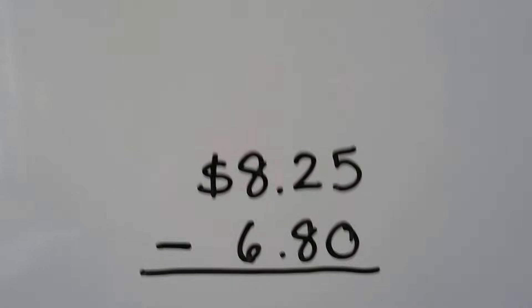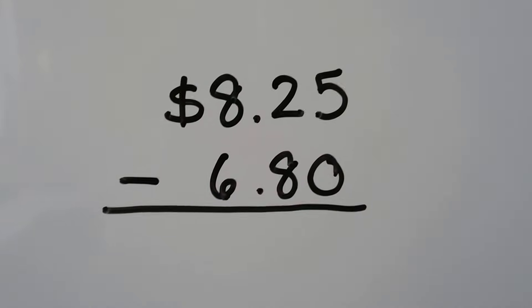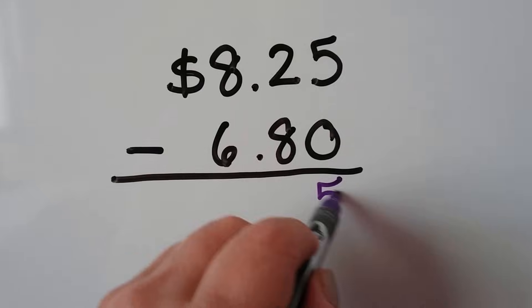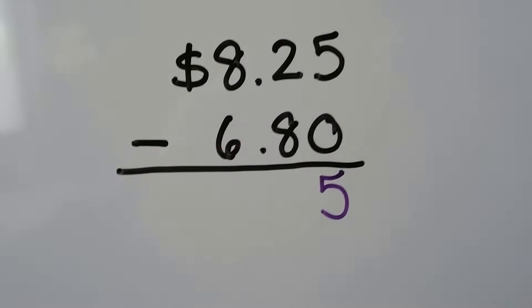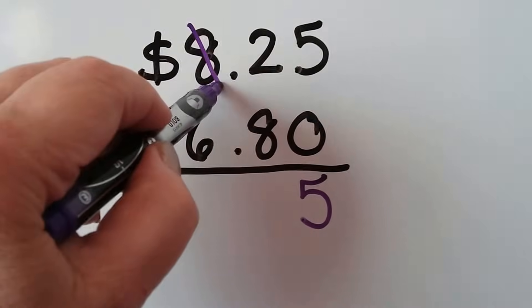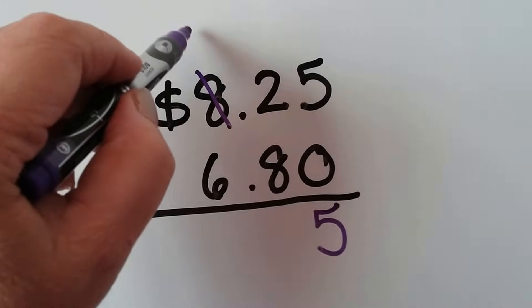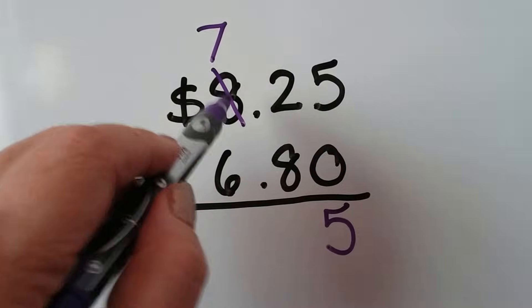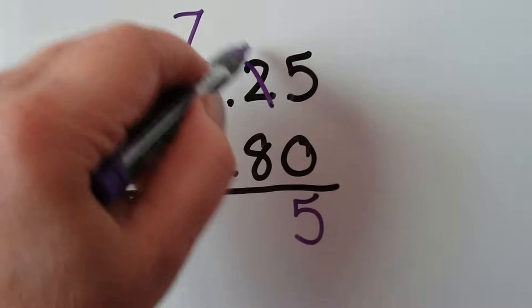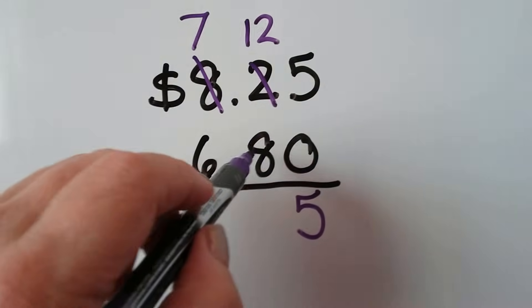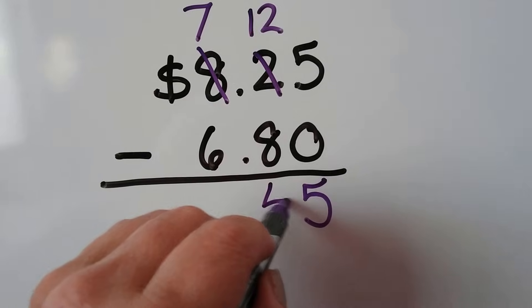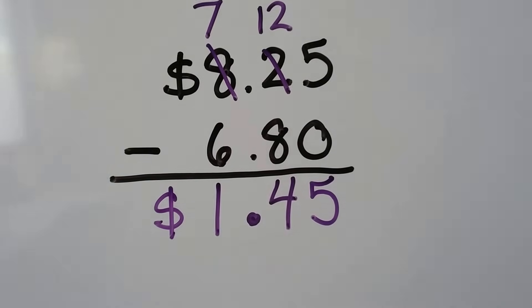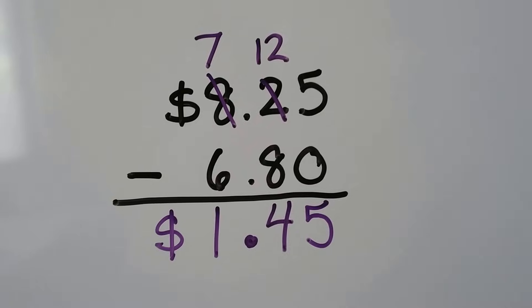Let's try another one. We have 8 dollars and 25 cents and we're going to take away 6 dollars and 80 cents. We do the ones place first: 5 minus 0 is 5. We have 2 and need to take 8 away — we can't do that so we're going to have to borrow from the dollars. The 8 becomes a 7, and this 2 becomes a 12 because we're taking 10 tens, which is a dollar. Now we have 12 take away 8 and that gives us 4. We remember our decimal point. 7 take away 6 is 1. We have 1 dollar and 45 cents for our difference.